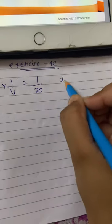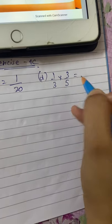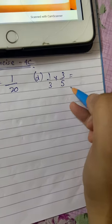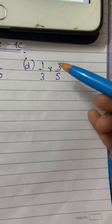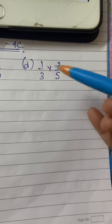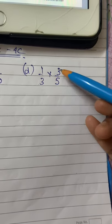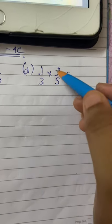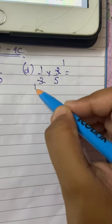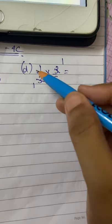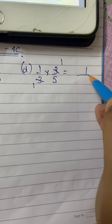Similarly, question number D: 1/3 into 3/5. You already know that we can cancel numbers in the numerator and denominator with a common number. Both 3s are divisible by 3, so I divide each by 3 to get 1 and 1. So the answer is 1 into 1 = 1, over 5 into 1 = 5, giving 1/5.